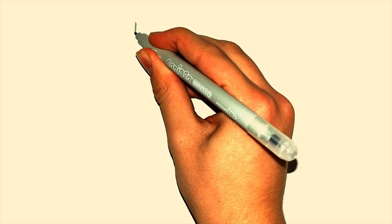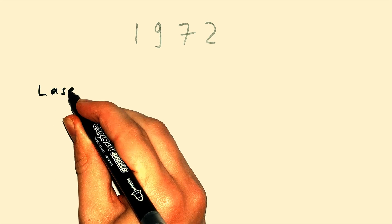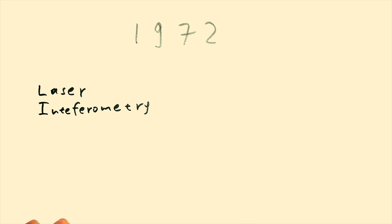The most successful measurement of C was done in 1972 using laser interferometry. Laser interferometry. Sounds familiar? Let me help you.